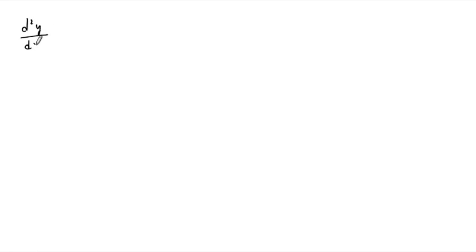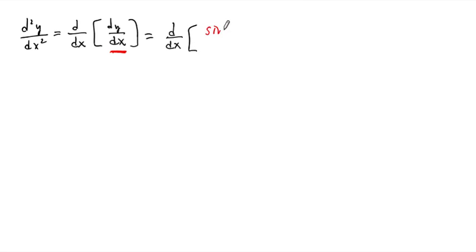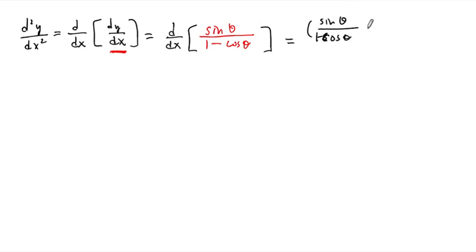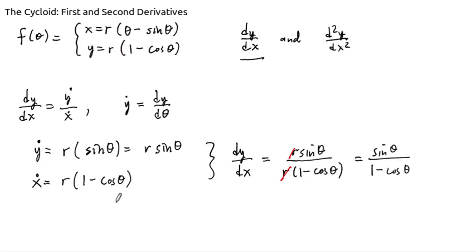Now we'd like to compute the second derivative. I'm going to go from the definition: d squared y / dx squared is the x-derivative of dy/dx. We just found a formula for dy/dx, so this becomes d/dx of sine theta over 1 minus cosine theta. Since that expression is already parametrized, we apply the parametric rule — we take the derivative with respect to theta of sine theta over 1 minus cosine theta, written with a dot, and divide by x-dot, which is r times 1 minus cosine of theta.